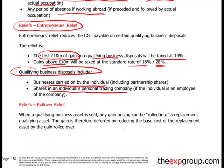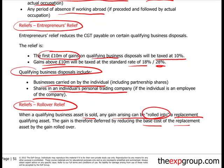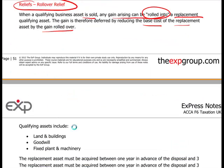Rollover relief applies when you sell an asset and any gain arising can be rolled into a replacement asset — for example, reinvesting in buildings, factories, or plant and equipment. The gain is deferred by reducing the base cost of the replacement asset by the rolled-over gain. So if you make a £50,000 gain, that gain is rolled over and the base cost of the new property is reduced by £50,000 — though the capital gains tax will eventually crystallize when the replacement asset is sold.